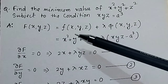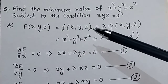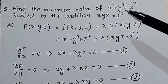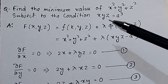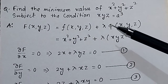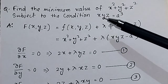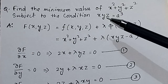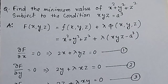Here the objective function f(x,y,z) = x² + y² + z², and the constraint is φ(x,y,z) = xyz = a³, or equivalently xyz − a³ = 0.